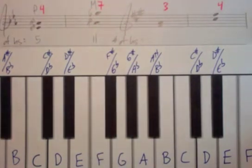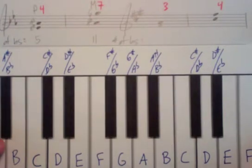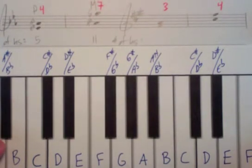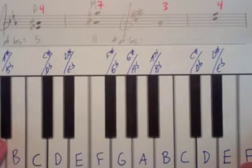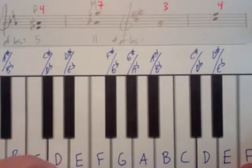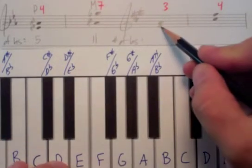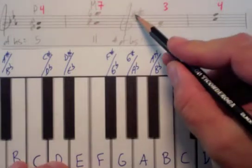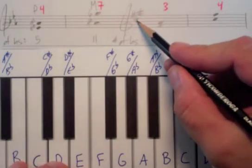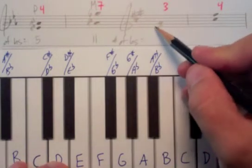I made that little mistake there just to show you what happens if you make a mistake — just joking, I actually just made a mistake. Anyway, so here we have a new key signature: F sharp, C sharp, G sharp.